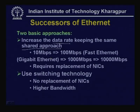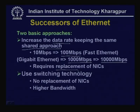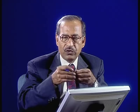Using the shared approach, speed can be increased from 10 Mbps to 100 Mbps (fast Ethernet), from 100 Mbps to 1000 Mbps (gigabit Ethernet), and now 10 Gbps networks are also on the horizon. This approach requires replacement of the network interface card whenever you change technology — from Ethernet to fast Ethernet or from fast Ethernet to gigabit Ethernet.